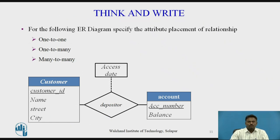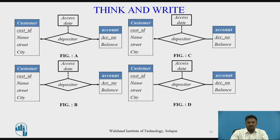Now pause the video and try this example. For the following ER diagram, specify the attribute placement of relationship one-to-many, one-to-one, and many-to-many. This is the solution: Figure A shows a one-to-one relationship — access date can be positioned with either entity, customer or account. Figures B and C show one-to-many relationships — access date is positioned on the many side, which is the customer entity in figure B and the account entity in figure C. Figure D shows a many-to-many relationship — in this case, access date is kept with the depositor relationship only.